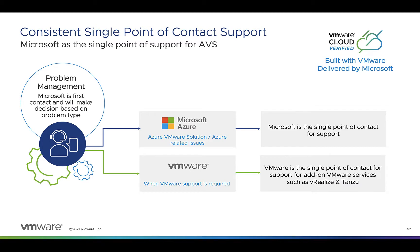AVS is delivered, sold, and supported by Microsoft — the consistent single point of contact for support. VMware works with Microsoft to certify AVS as a VMware platform running on Azure. Microsoft provides support to AVS customers for all issues and takes ownership of all support issues affecting the AVS stack, which would include the Azure bare metal servers and networking infrastructure, as well as the VMware components of AVS: vSphere, vCenter, vSAN, NSX-T, and HCX.